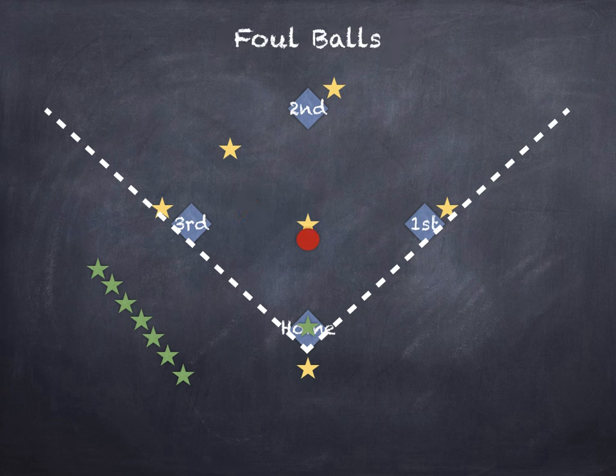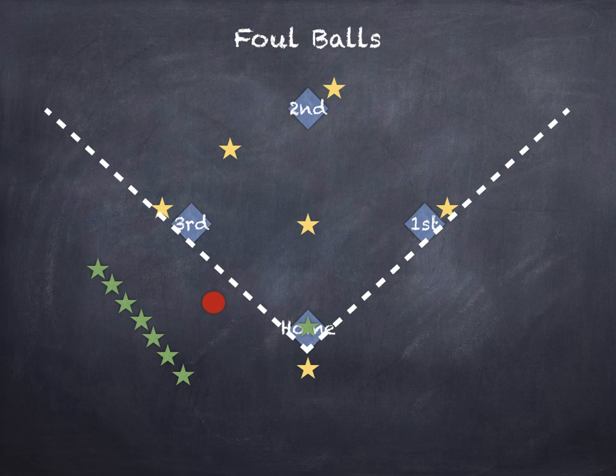If the person kicks it and the kick goes outside of those imaginary lines, that's called a foul ball. The ball goes back to the pitcher and the person kicking gets to try again. You get as many foul kicks as you need — we just keep kicking until the person kicks it inbounds.